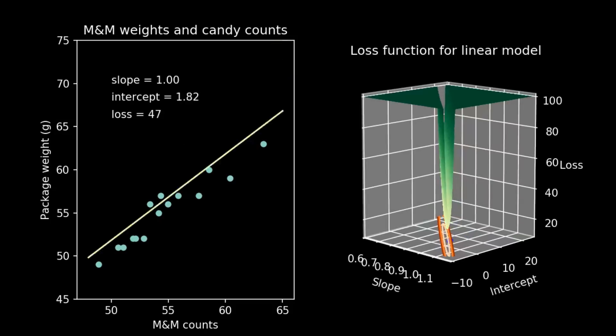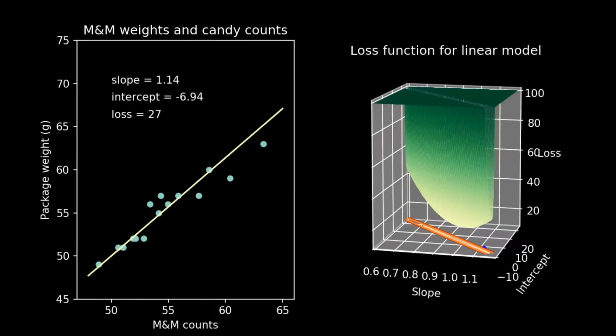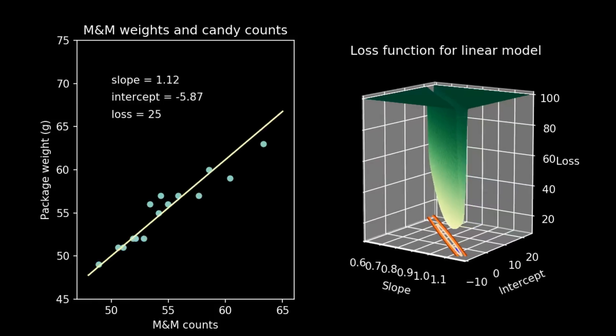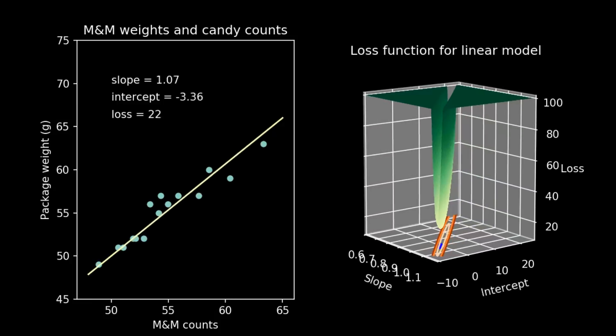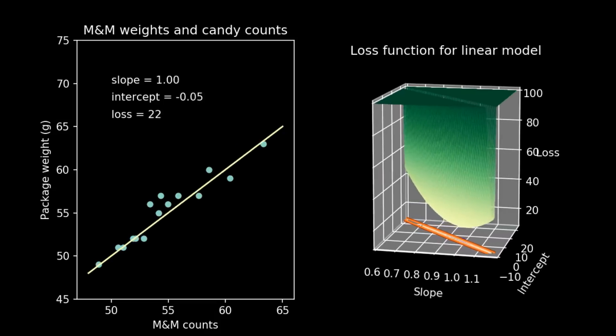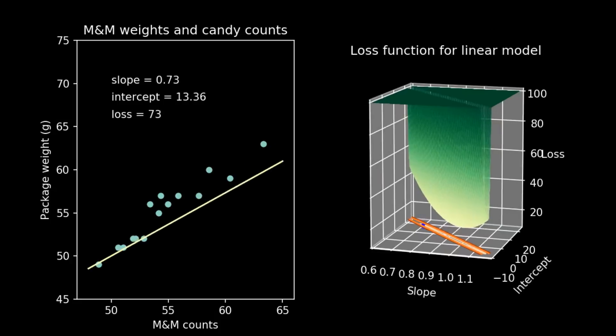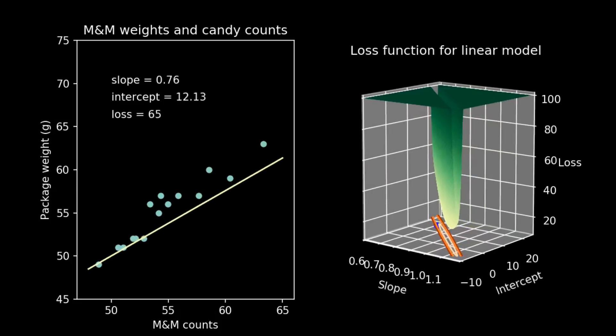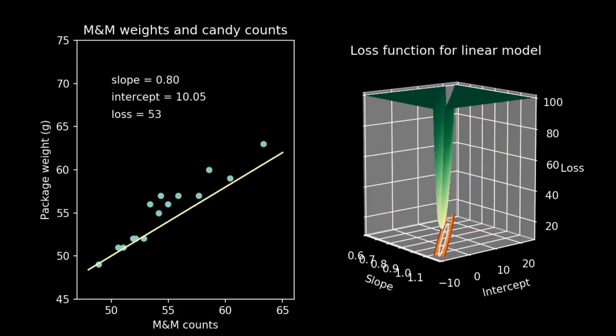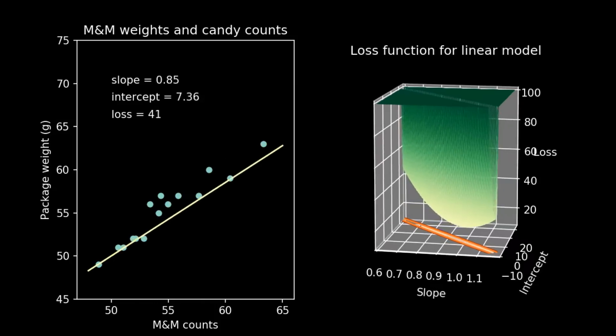We can change gears and play with the second parameter, the slope. This corresponds to moving in a different direction in the parameter space. In our model, it results in wiggling the line back and forth. And again, we see that depending on the value of the slope, the value of the loss function goes up and down, but it never quite reaches the bottom, its lowest possible value.